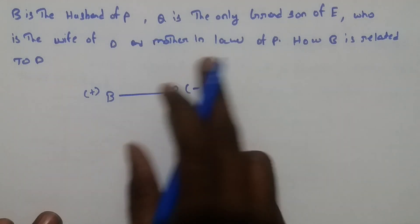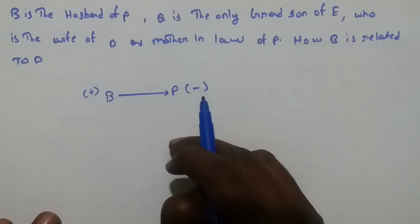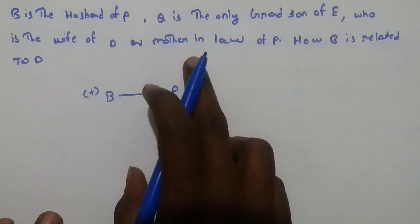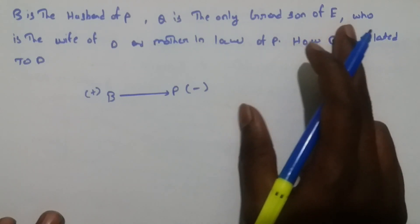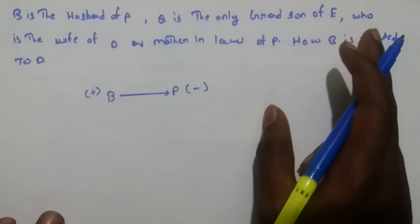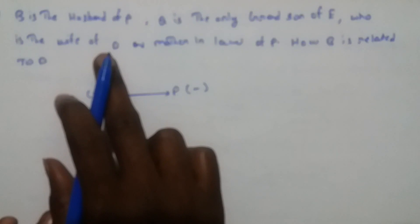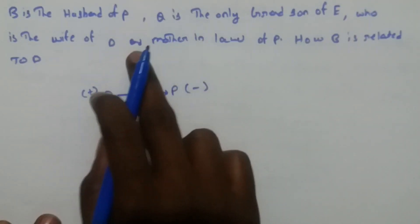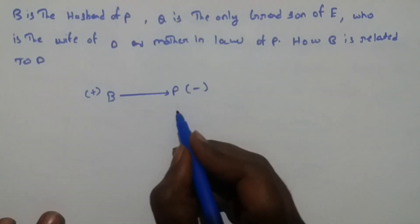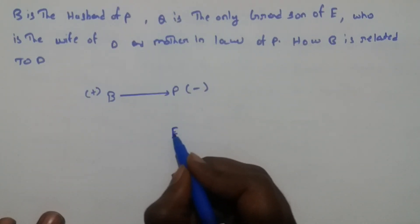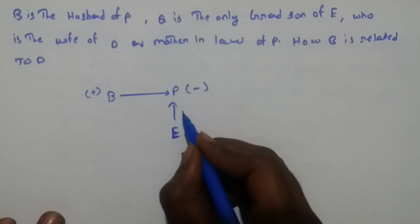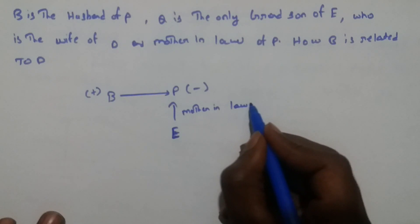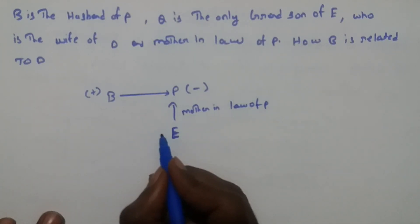Now the second statement: Q is the only grandson of E. Then E is the wife of D and the mother-in-law of P.